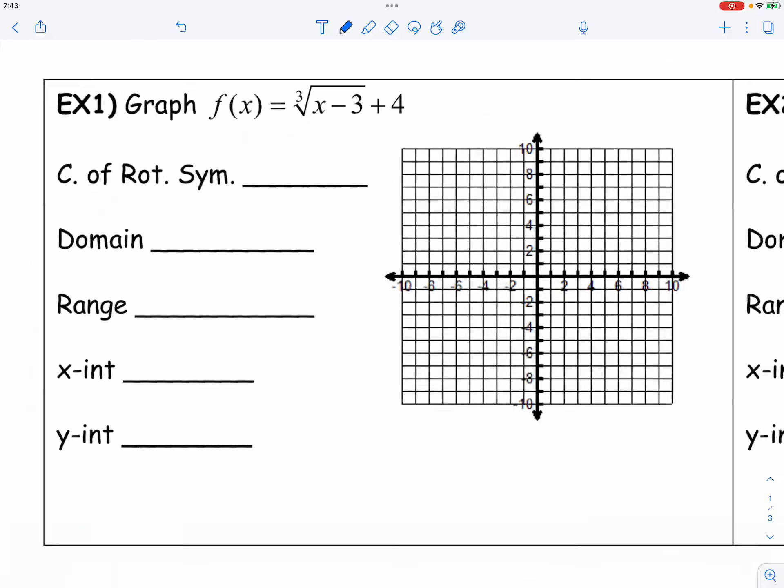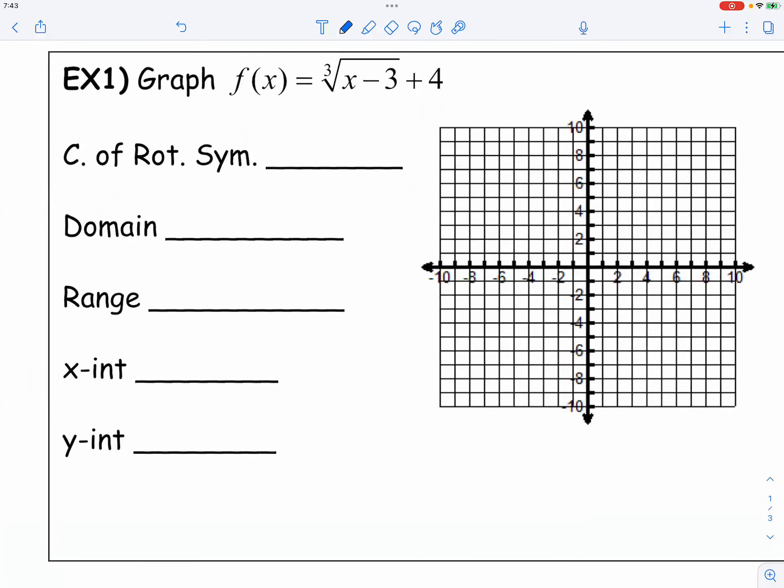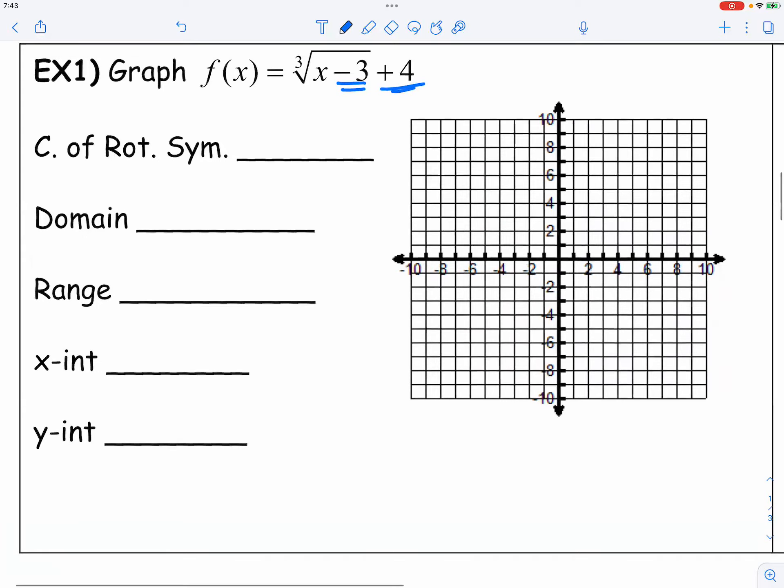For example number one, very straightforward. I hope you know how to tell the transformations here. It's moving to the right three, up four. So that means the point is right here.